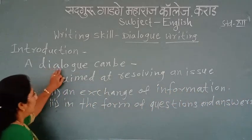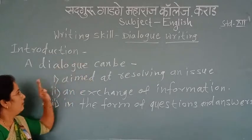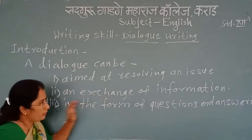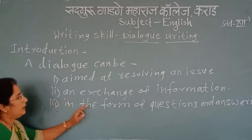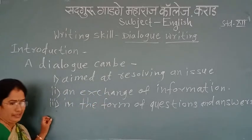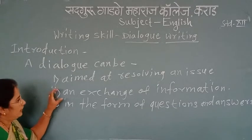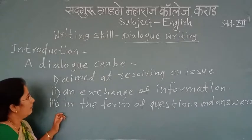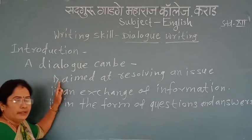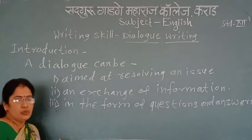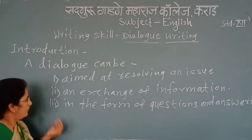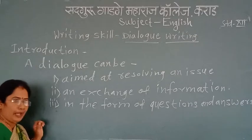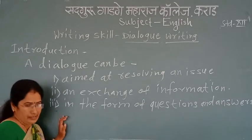Students, a dialogue can be first aimed at resolving an issue, second an exchange of information, and third in the form of questions and answers. Here we get actual information about the dialogue. Sometimes this dialogue is aimed at resolving any issue, sometimes it is an exchange of information, and sometimes it is in the form of questions and answers.